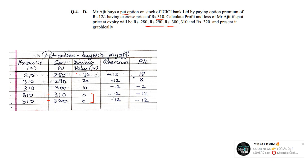Under a put option, the lower the spot price the better it is for you. When you buy a put option at 310: if the spot is 310 or goes beyond 310, you have no profit — the intrinsic value is 0. Since you are buying a put option, the premium is negative: negative 12 in all cases. Profit and loss: 30−12 = +18, 20−12 = +8, 10−12 = −2, 0−12 = −12, and 0−12 = −12.